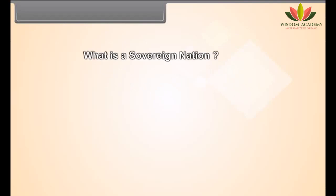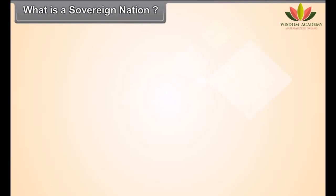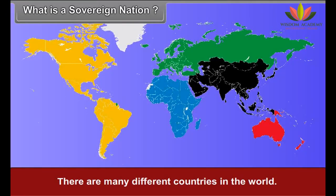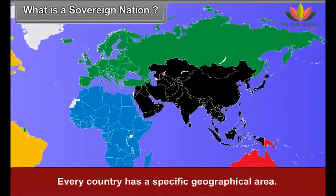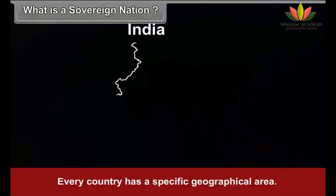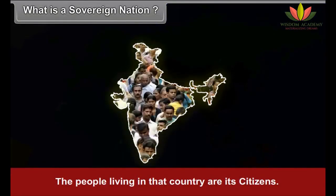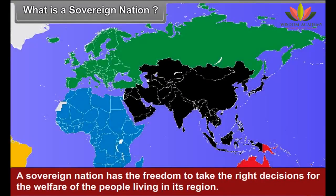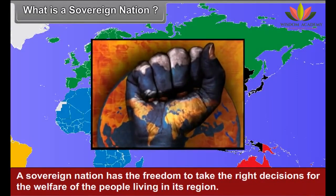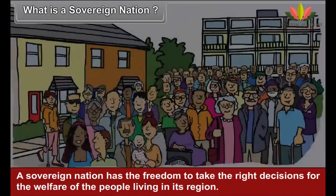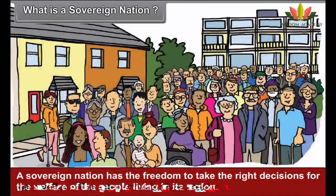What is a sovereign nation? There are many different countries in the world. Every country has a specific geographical area. The people living in that country are its citizens. A sovereign nation has the freedom to take the right decisions for the welfare of the people living in its region.